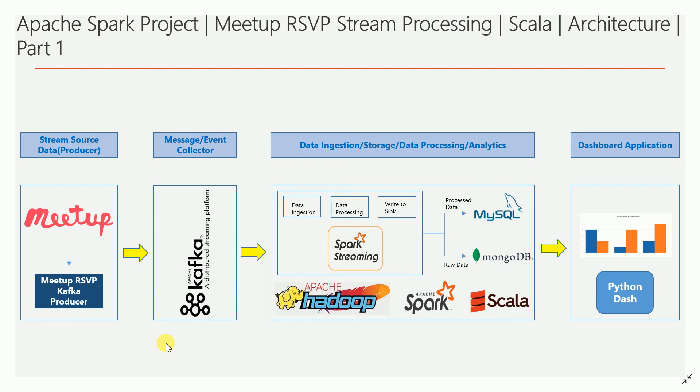Meetup.com publishes what RSVPs people are submitting — whether they are saying yes, no, or maybe — for different events in different groups, in real time as stream data to the outside world. This is publicly available data. They provide a REST API that keeps sending JSON messages, so the RSVP messages come in JSON format as a real-time stream.